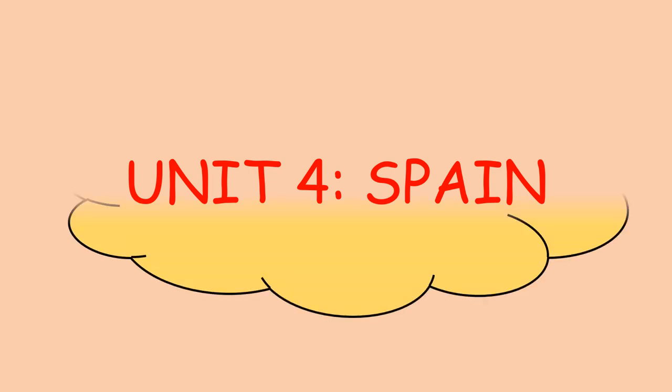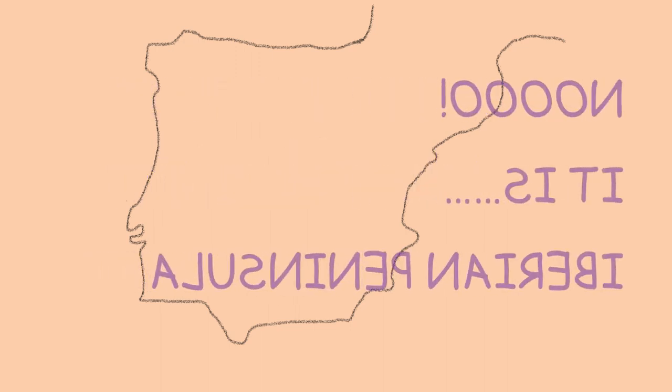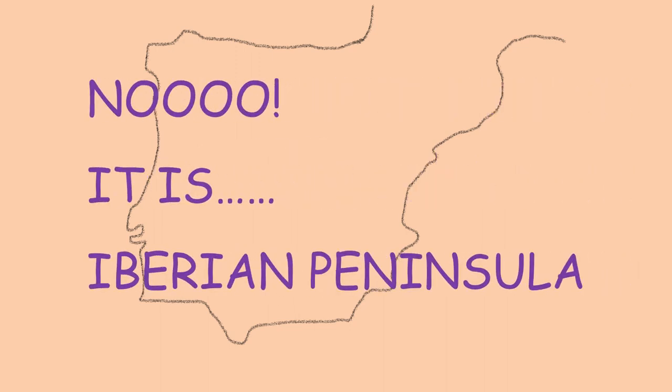In unit number four, we are going to speak about Spain. The first thing we are going to learn about Spain is the political map. Is it Spain? No, it is the Iberian Peninsula.